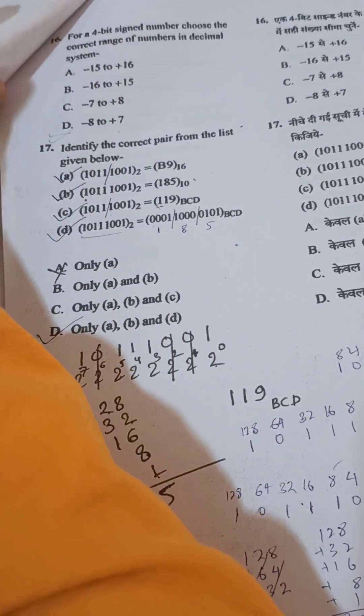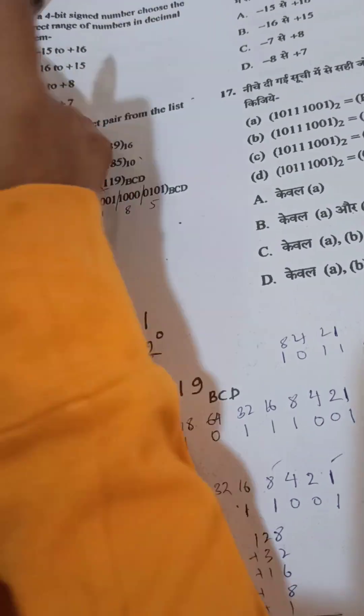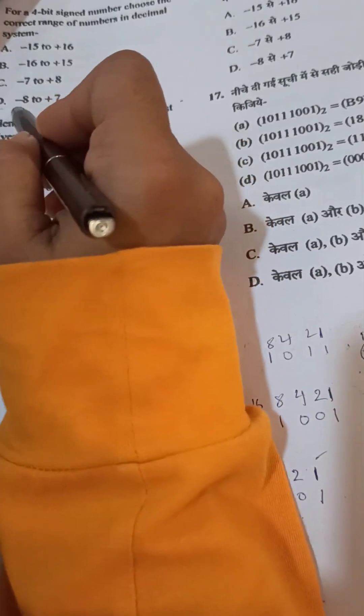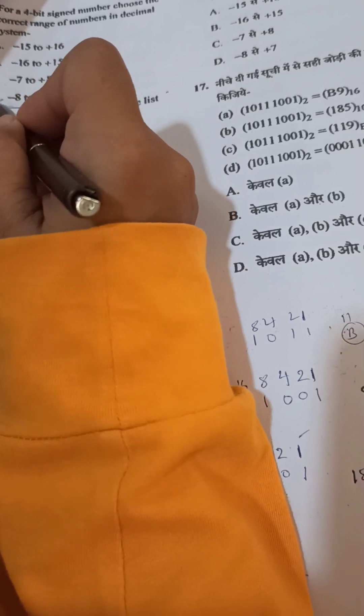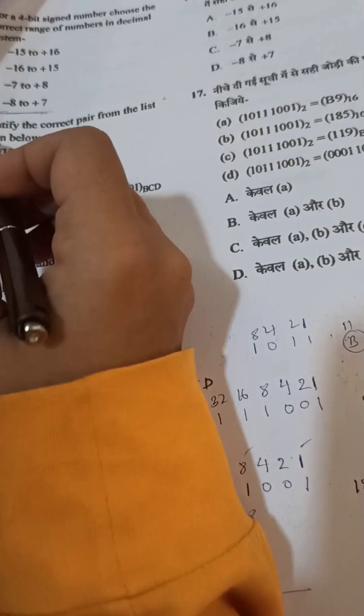Then question number 16. That should be minus 8 to plus 7. This should be answer key.